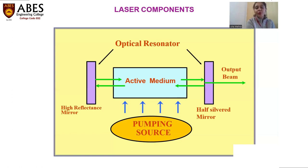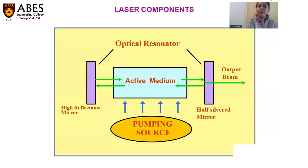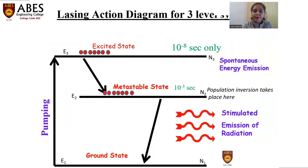The second component is the pumping source. Once the collection of atoms is present in the active medium, there must be some pumping source — it can be electrical pumping or optical pumping — to give energy to these atoms so they can reach higher energy levels. This is what happens in the three-level system: we give energy to the ground state atoms so they are pumped up to the higher energy level.